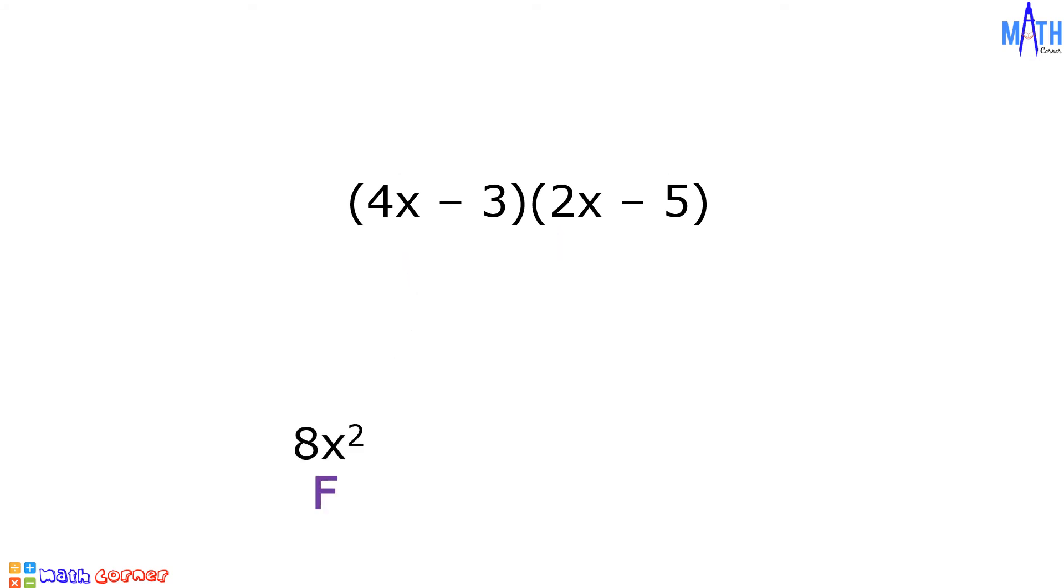Inner terms, negative 3 times 2X is equal to negative 6X. And last terms, negative 3 times negative 5 is equal to positive 15.